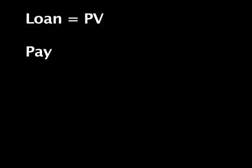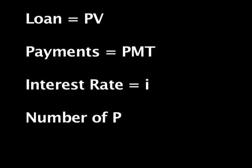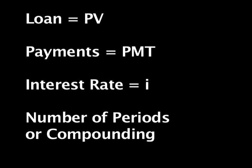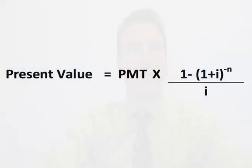In a mortgage loan there are always four variables: one, the loan or present value; two, the payments; three, the interest rate; and four, the compounding frequency. For more details on compounding, check out my video on the subject. To find one of these variables, you must apply the following formula. In general, you either want to find the amount of the loan or the payments — the interest rate is hard to find manually.